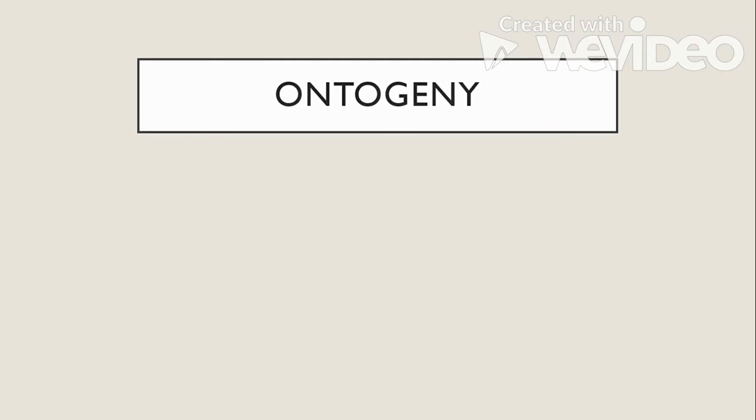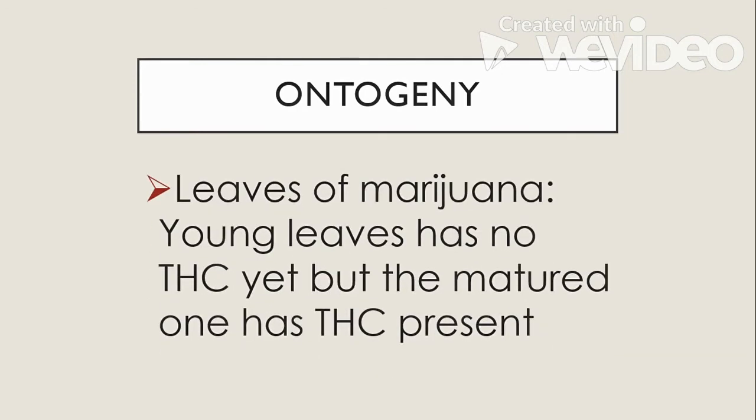We also have ontogeny, which refers to the development of an individual organism. For example, the leaves of marijuana — the young leaves have no tetrahydrocannabinol yet, but the matured ones have tetrahydrocannabinol present. So tetrahydrocannabinol is the active constituent of marijuana.